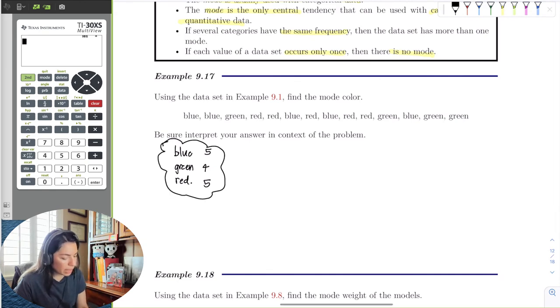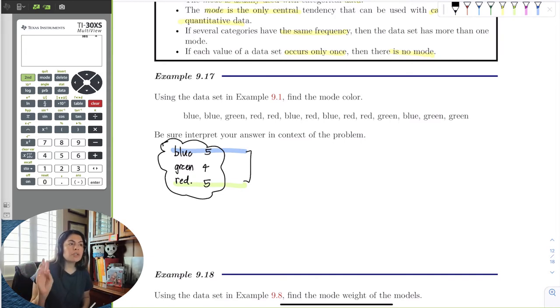We could see that blue and green occur the most because they're both at 5, but also... I'm sorry, blue and red both occur five times. It is the most frequent colors, blue and red.